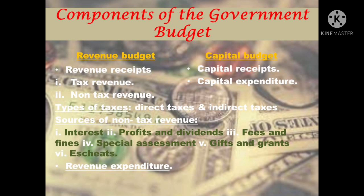Fourth, special assessment — sometimes the government undertakes developmental activities by which the value of nearby property appreciates, leading to an increase in wealth. It is the payment made by the owners of those properties whose value has appreciated. Fifth, gifts and grants — the government receives financial help in the form of grants and gifts from foreign governments and international organizations, especially during national crises such as earthquakes, floods, and wars. Sixth, escheat — this refers to the claim of the government on the property of a person who dies without leaving behind any legal heir or a will.